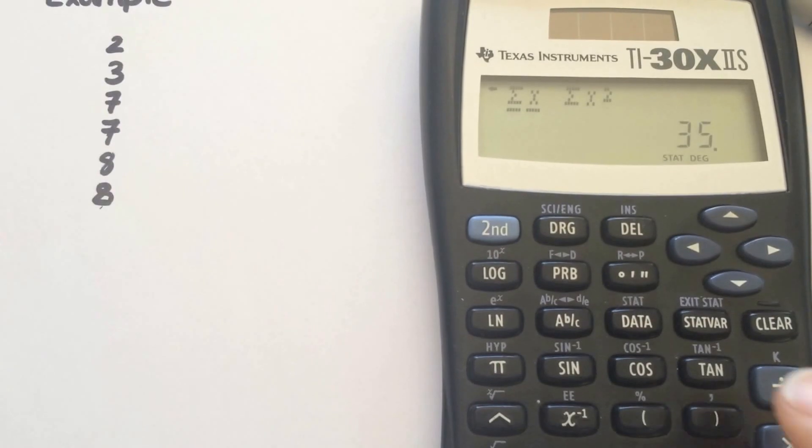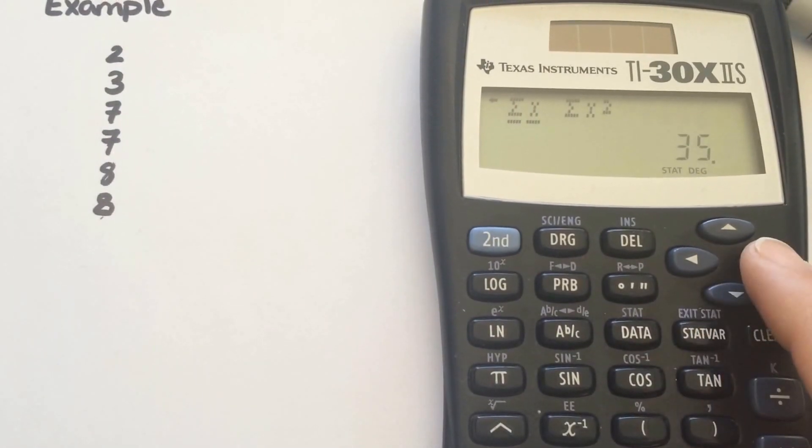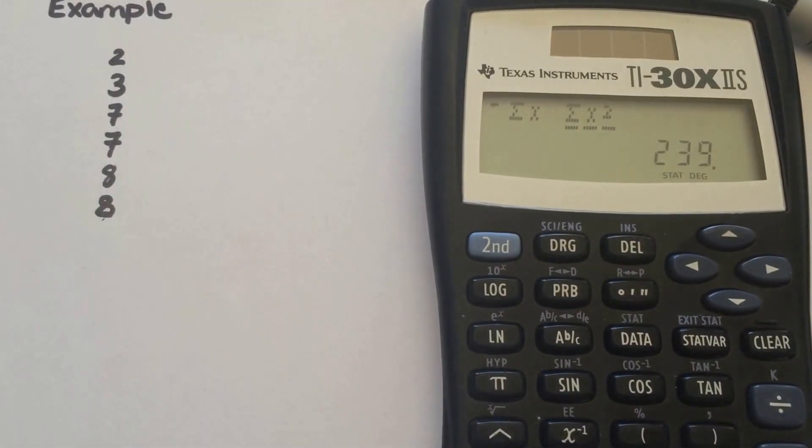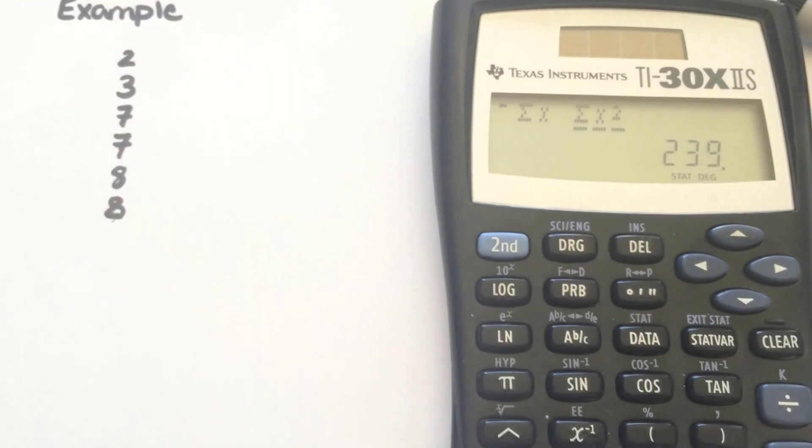If you add those, you have 35. Let's just add the values here. And scroll again. And that's the sum of the x values squared. So if I squared all these and I want to add them, it's 239.